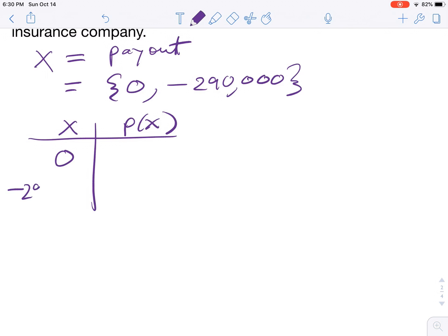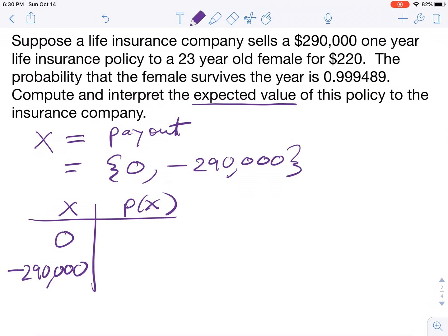So we're going to put zero, negative $290,000. Probabilities are 0.999489 and 0.000511. That's our probability distribution.